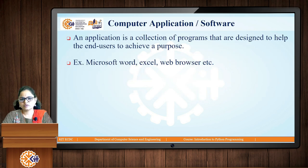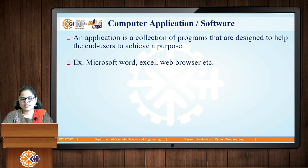Next is computer application or computer software. We have learned that a computer program is a set of instructions given to the computer. Now, the computer application is a collection of such programs that are designed to help the end user to achieve a purpose. For example, when you access Microsoft Word or Excel, or any computer-related application, it is designed using a set of programs — it is not a single program but a collection of different programs.